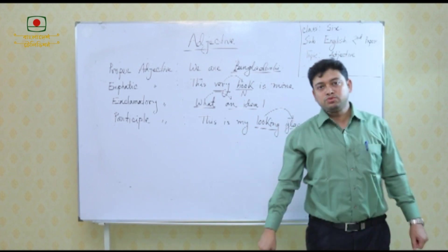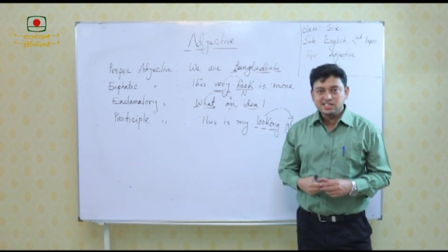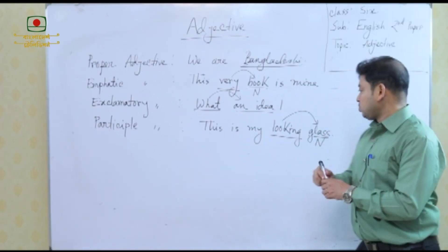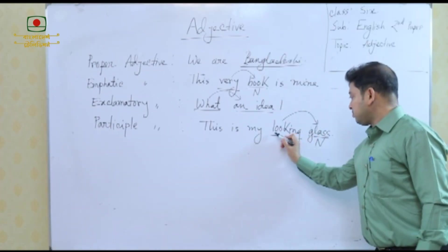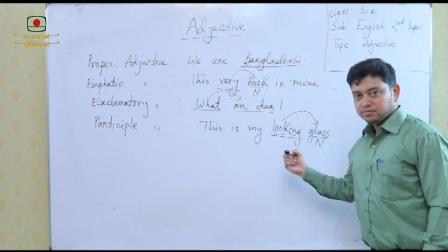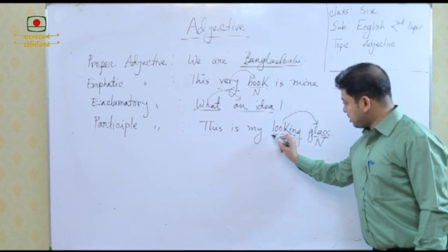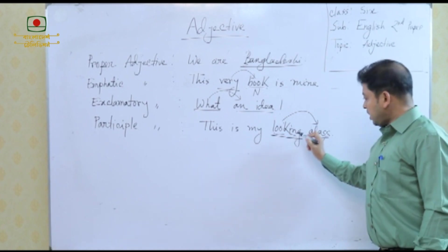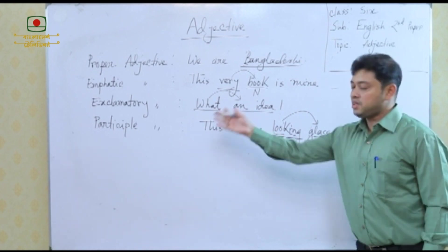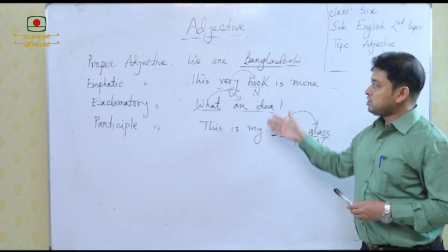The last one is participle adjective. A participle is formed when a verb has '-ing' added to it, but here it acts as an adjective. For example, the verb 'look' becomes 'looking'. It is qualifying the word 'glass', so it becomes a participle adjective — a participle that qualifies a noun.